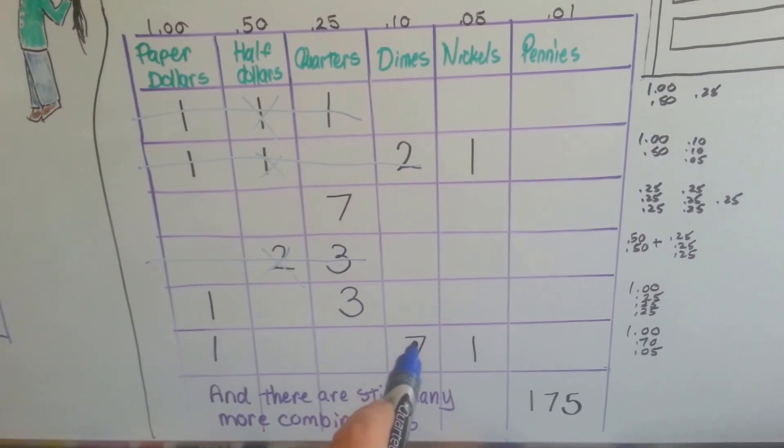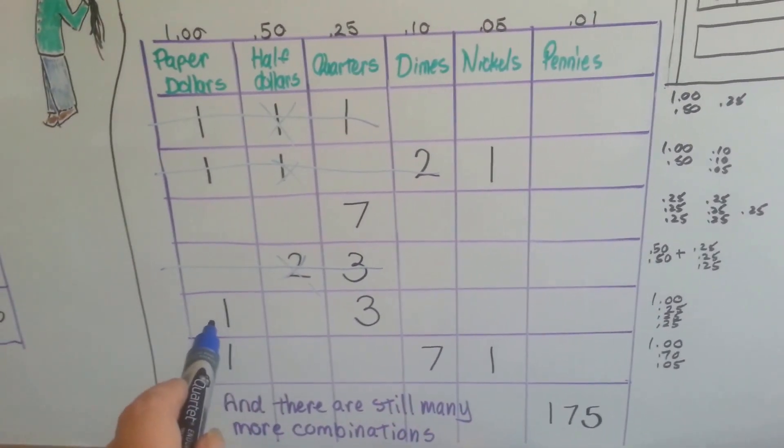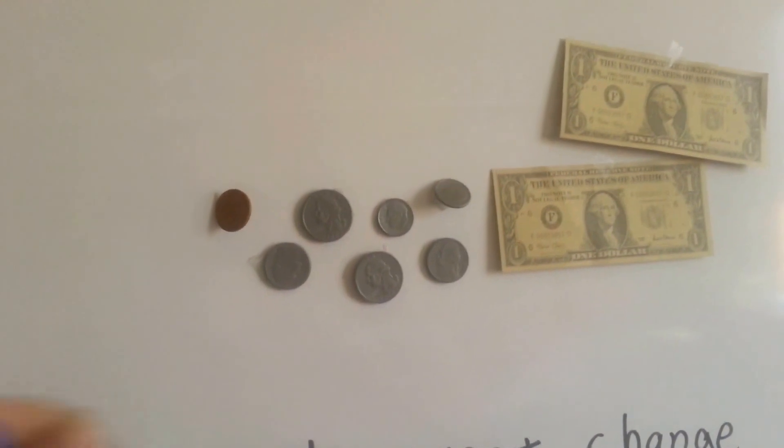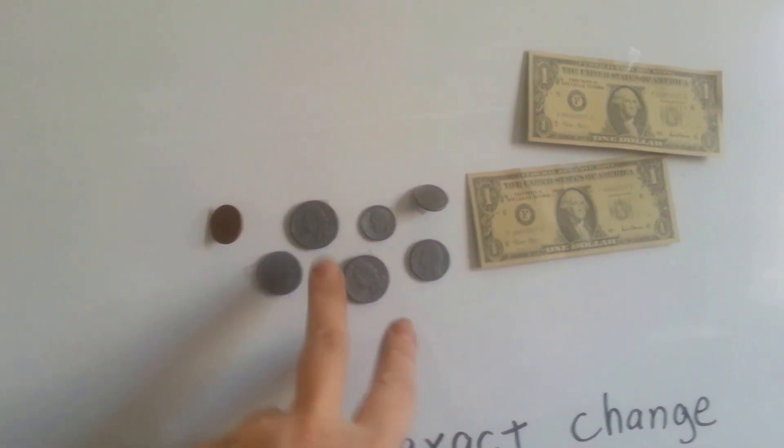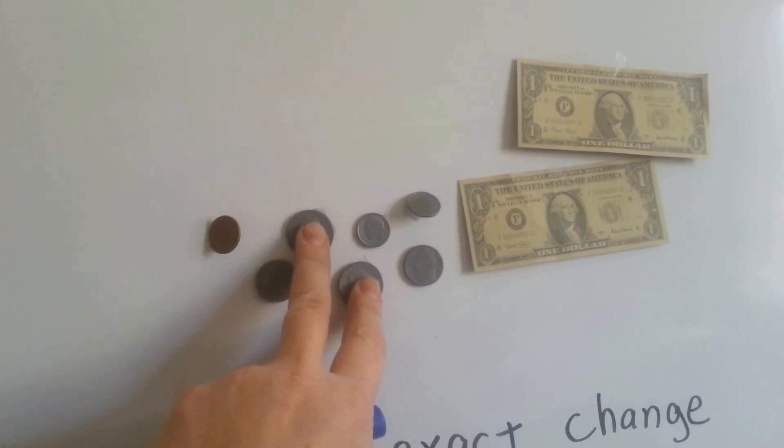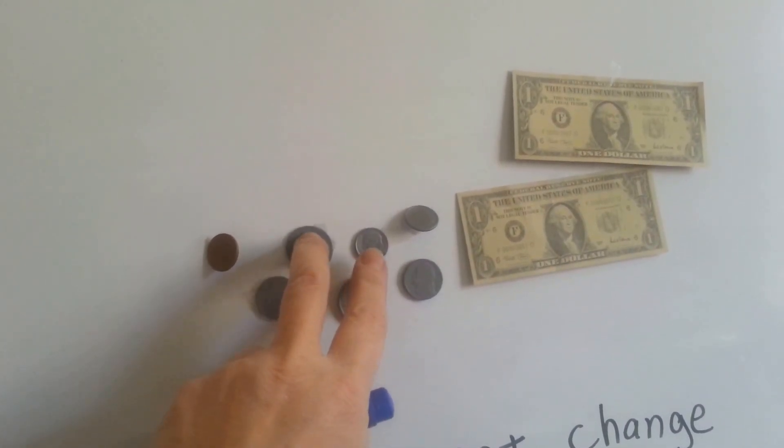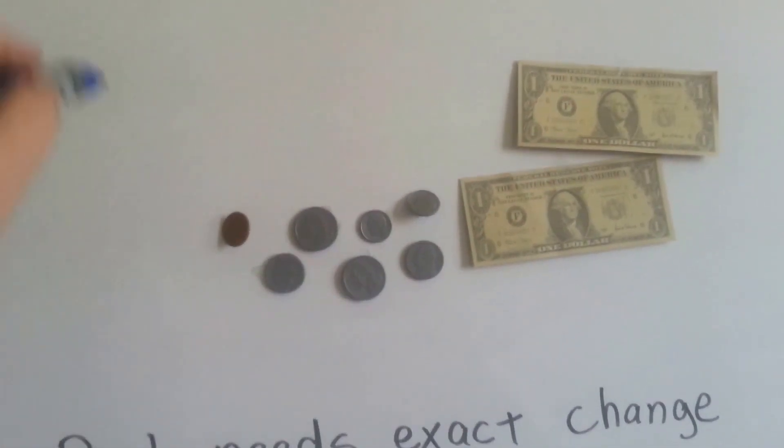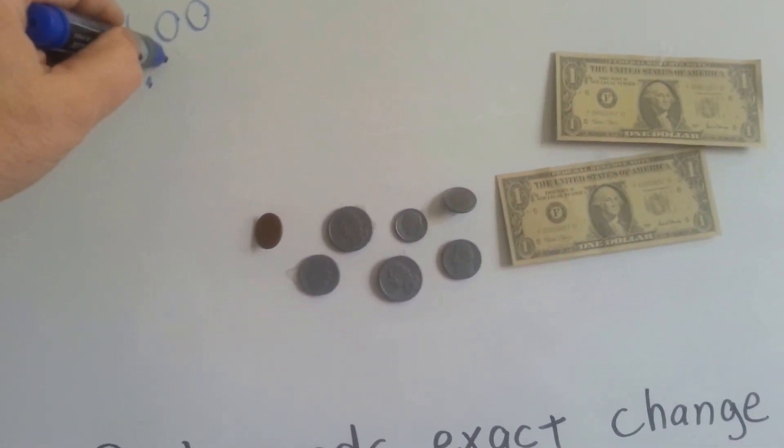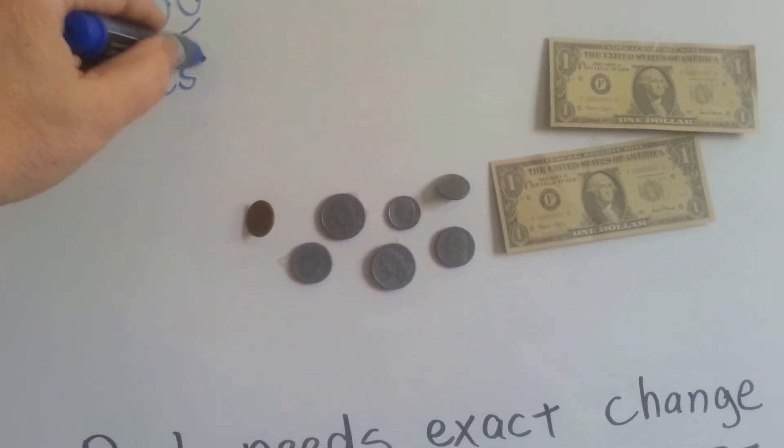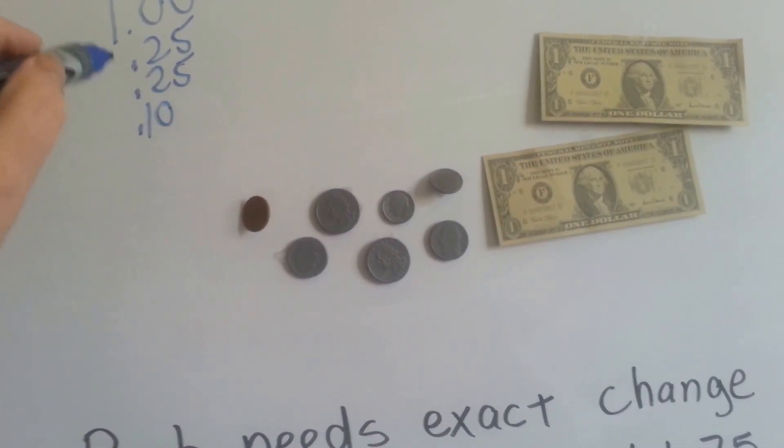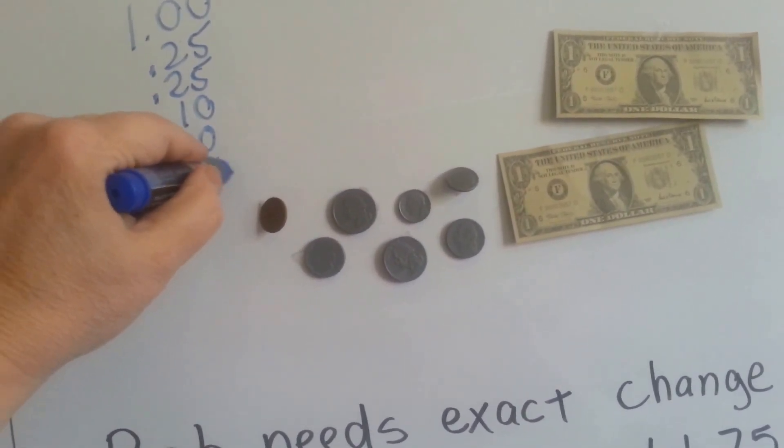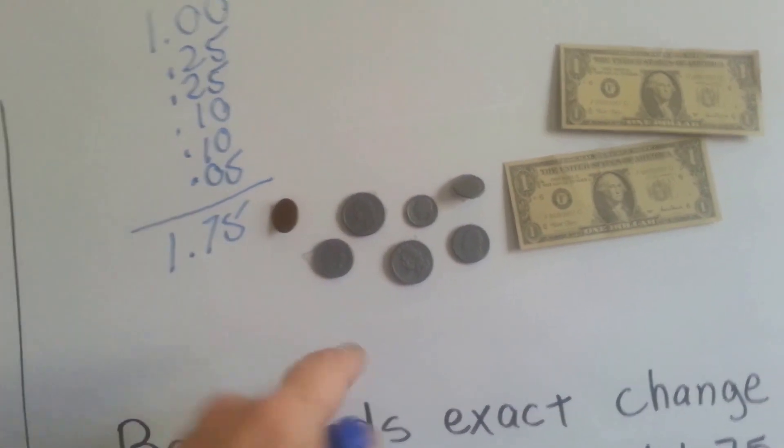He could use one paper dollar, seven dimes, and one nickel. He could use one paper dollar and three quarters. Actually, what he can use, if you look at this, he can use a paper dollar, these two quarters to make a dollar fifty altogether. And then a dime would be a dollar sixty. Another dime would be a dollar seventy. And then the nickel would be one seventy-five. So he would've used a dollar, twenty-five cent piece, twenty-five cent piece, a ten cent piece, and a five cent piece. And that would've equaled the dollar seventy-five. Because that's what he's got.